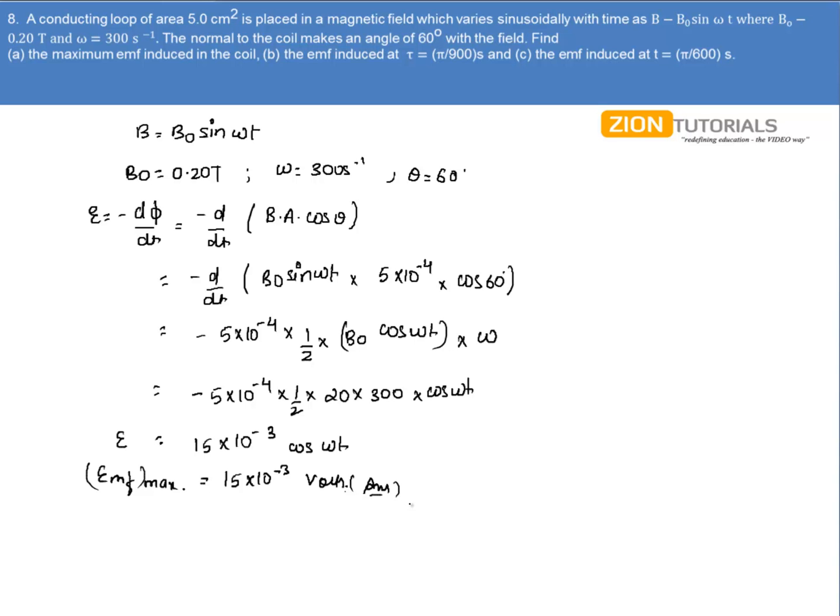In the second part we have to calculate the EMF induced at t equal to π/900 seconds. Simply substituting the value of t in the EMF that we calculated, we have 15 × 10⁻³ cos of ω, that is 300, into π/900. On solving this equation we get the EMF induced at 7.5 × 10⁻³ volts.